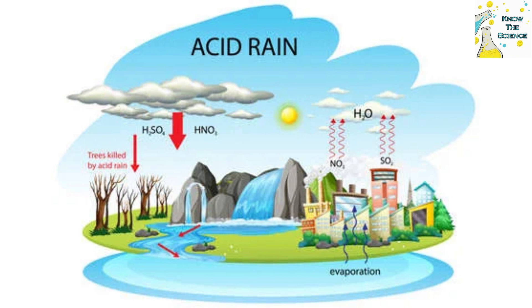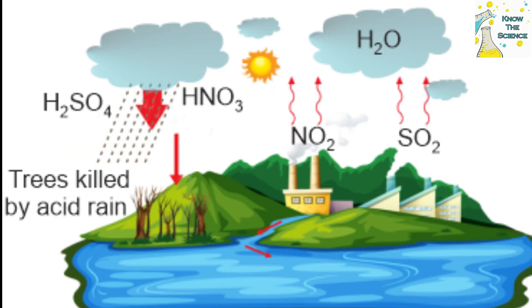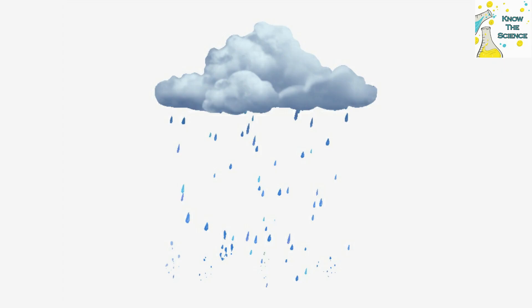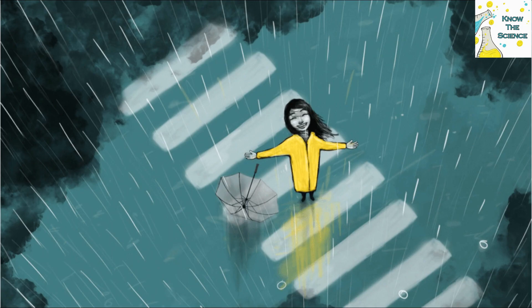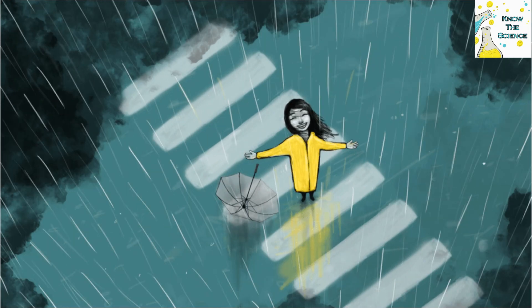These three pollutants, which can be transported over long distances from where they originate, oxidize in contact with the atmosphere and result in the formation of sulfuric acid and nitric acid. These acids dissolve in water droplets in the clouds and fall on the earth's surface as acid rain, which can also occur in the form of snow or fog.